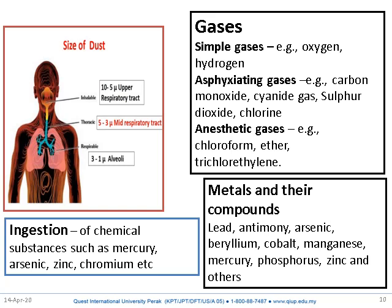Anesthetic gases include chloroform, ether, and trichloroethylene. The next component of chemical hazards includes metals and their compounds like lead, antimony, arsenic, beryllium, cobalt, manganese, mercury, phosphorus, zinc, and others. All these metals are also chemical hazards.